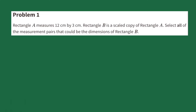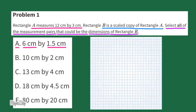Rectangle A measures 12 cm by 3 cm. Rectangle B is a scaled copy of Rectangle A. Select all the measurement pairs that could be the dimensions of Rectangle B. The first option is 6 cm by 1 and 5 tenths centimeters.